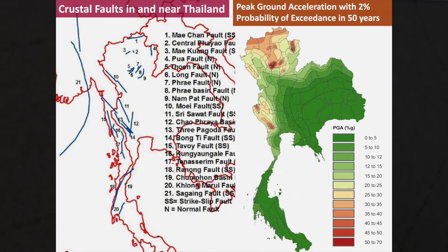Our team developed the map using knowledge about active faults in this region — in Thailand, in Vietnam, and in Indonesia. We have maps covering many parameters, not just PGA.